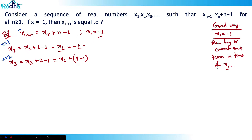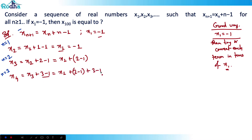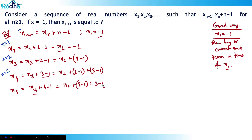See the pattern: x1 = −1, x2 = x1, x3 = x1 + (2−1). For x4, put n = 3: x4 = x3 + 3 − 1 = x1 + (2−1) + (3−1). For x5, put n = 4: x5 = x4 + 4 − 1 = x1 + (2−1) + (3−1) + (4−1). We keep building the pattern this way.